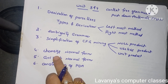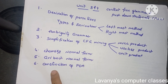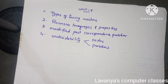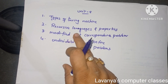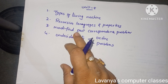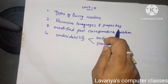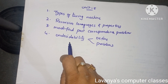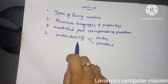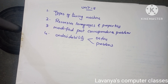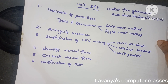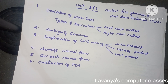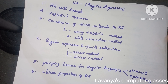Next, Chomsky Normal Form, Greibach Normal Form, and construction of PDA — all very important concepts from units 3 and 4. Last, unit 5: Turing machines. Define Turing machine, what are the types of Turing machines, recursive languages and their properties, Modified Post Correspondence Problem, and undecidability — define undecidability and problems on undecidability. Read all these questions without leaving any; it will be very easy to attempt all questions in FLAT.